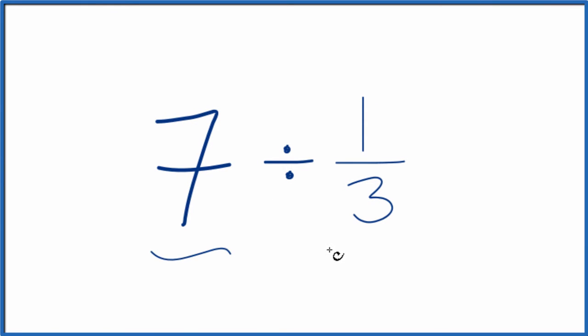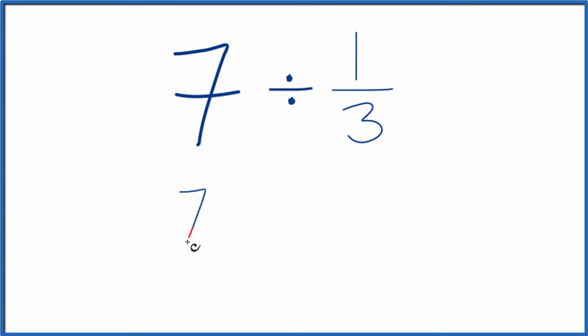If you're asked to divide 7 by 1/3, here's how you do it. So first off, let's call this 7 over 1. It's still 7, we're just dividing by 1, but having a fraction makes it a lot easier to solve this problem.